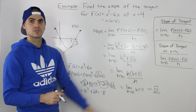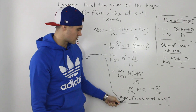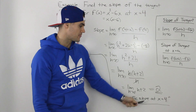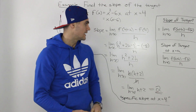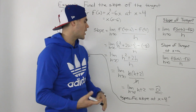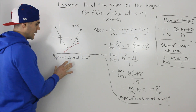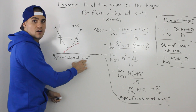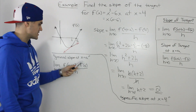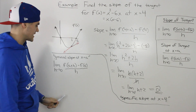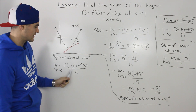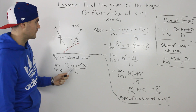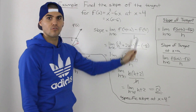So the slope of the tangent for x² - 6x at x = 4 is 2 — the slope of that red line equals 2. Now that's one approach where we found the specific slope right away. Another popular approach teachers use is to find the general slope of the tangent at an x value of 'a' using the same limit formula: limit as h → 0 of [f(a+h) - f(a)] / h, with 'a' as a general variable.